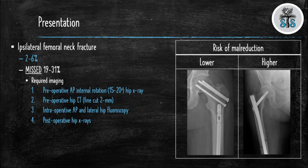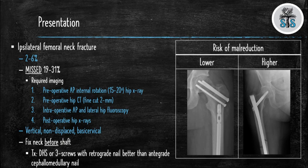If there is a femoral neck fracture, it will most likely be vertically oriented, non-displaced, and located in the basal cervical area. You should always fix the femoral neck fracture first prior to fixing the femoral shaft. Ideally, you will fix the femoral neck fracture with a DHS or three percutaneous screws with a retrograde nail. Studies have demonstrated that using two implants compared to one reduces the risk of malreduction when fixing both the femoral neck and femoral shaft. The images on the right demonstrate two implants versus one implant.